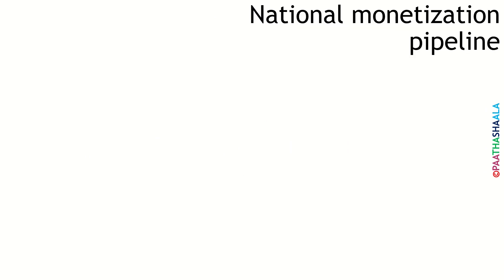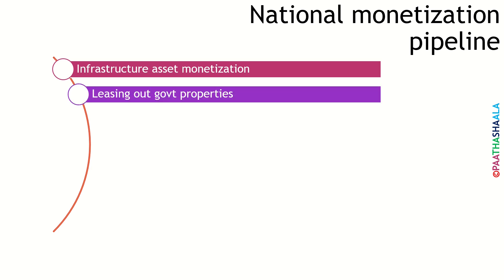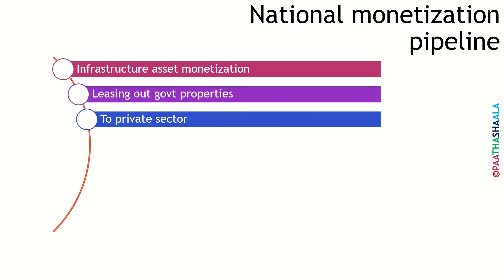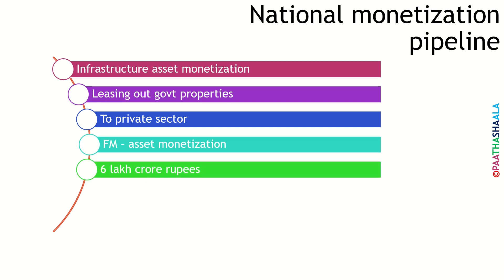National monetization pipeline doesn't mean an actual pipeline, but it is a project to generate income through infrastructure asset monetization by leasing out central government assets to the private sector. The union finance minister announced this program to raise rupees 6 lakh crore under the national monetization pipeline project. Under this project the government has identified 13 sectors which include airports,